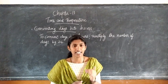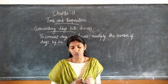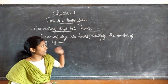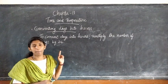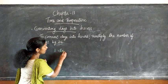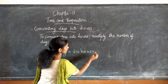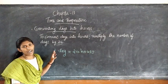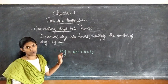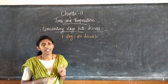To convert days into hours, we have to multiply the number of days by 24. We already know that 1 day is equal to 24 hours. So to convert days into hours, we have to multiply the number of days by 24.